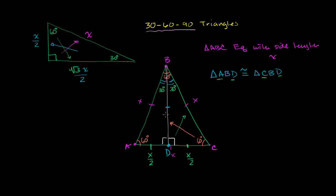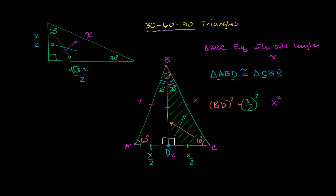We'll call that side BD. We can use the Pythagorean theorem here. BD squared plus the length x over 2 squared is going to equal the hypotenuse squared. So we get BD squared plus (x over 2) squared equals x squared. To be clear, I'm looking at the right triangle on the right side and applying the Pythagorean theorem: this side squared plus this side squared equals the hypotenuse squared. Now let's solve for BD.